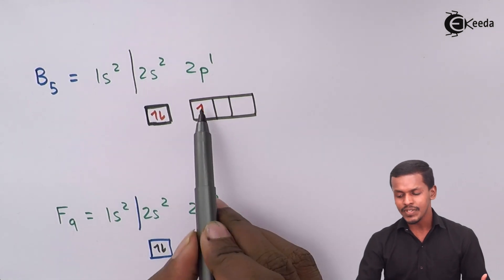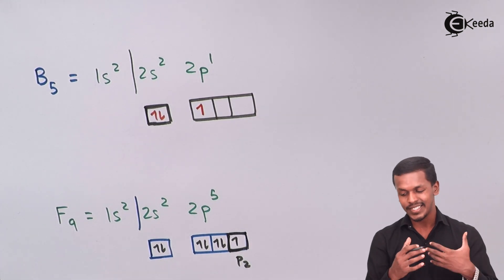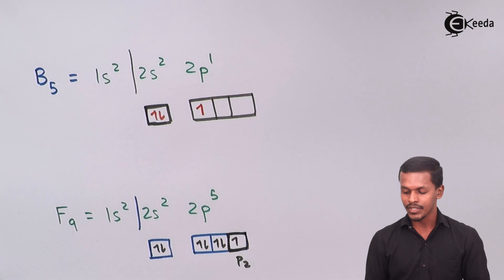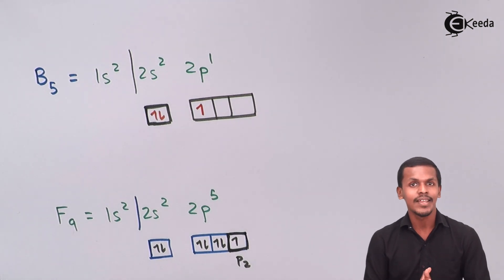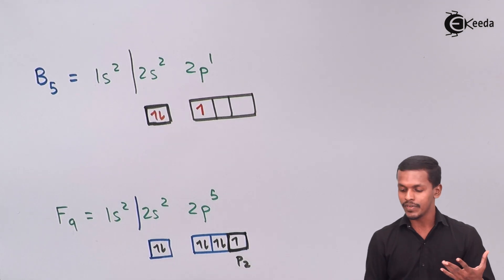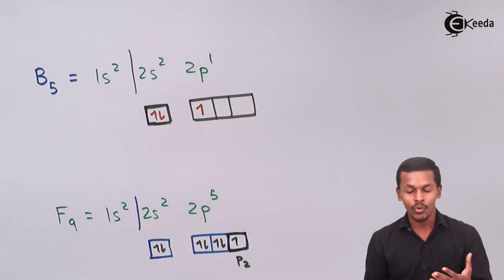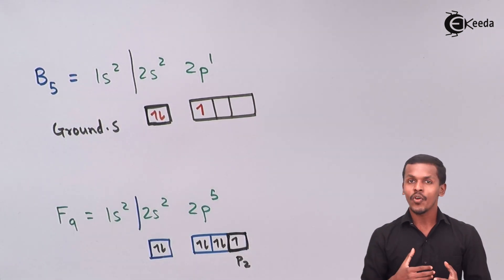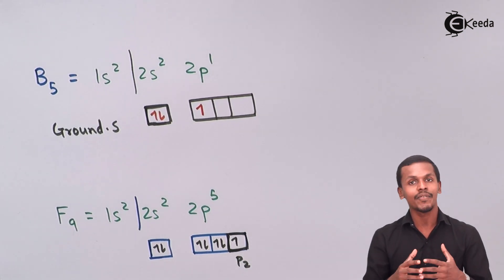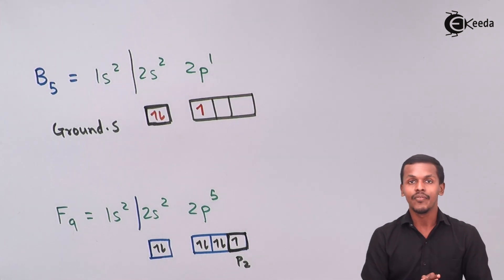In the ground state, only one unpaired electron is present in the outermost shell of boron. Fluorine also has one unpaired electron, so there would be only one bond between boron and fluorine. But since we need BF3, we must create vacant orbitals so that three fluorine atoms can accommodate their electrons in the orbitals of boron. The electronic configuration shown for the central boron atom represents its ground state.